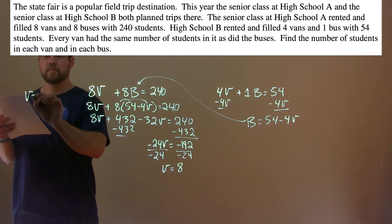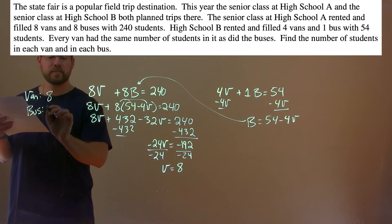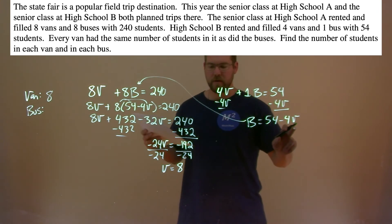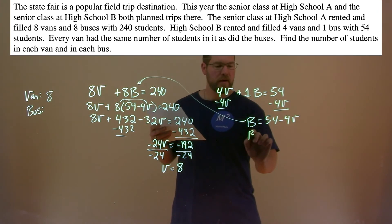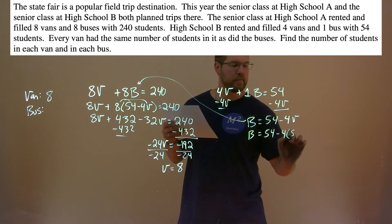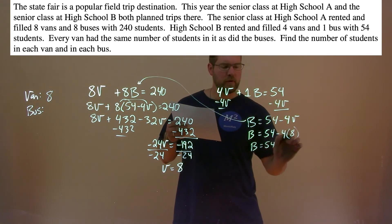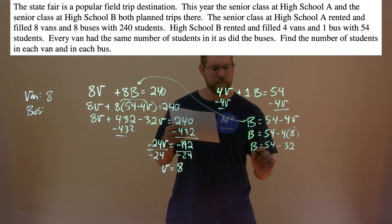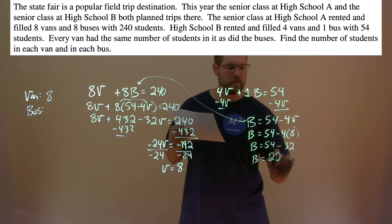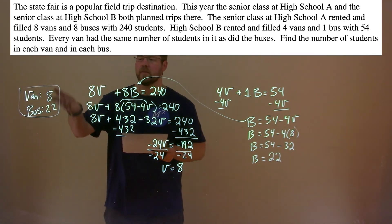Divide both sides by negative 24, and we're left with v equals negative 192 divided by negative 24, which is 8. So the van had 8 students. What about the bus? We take that information and plug it in for b: b equals 54 minus 4 times 8. 4 times 8 is 32, so b equals 54 minus 32, which is 22. So there are 22 students on each bus, and each van had 8 students.